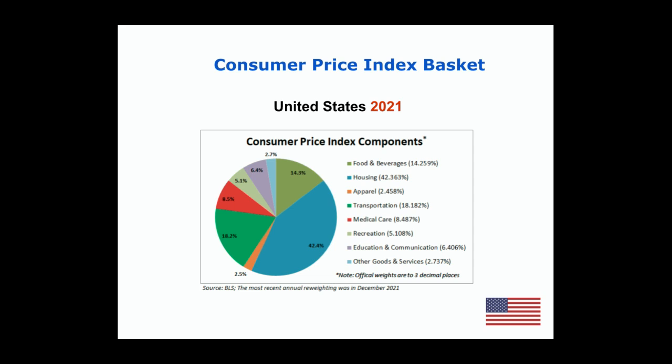When we look at the Consumer Price Index, we can see those eight categories and how they're weighted. The last weighting was done in 2021, and you can see that 42% of the basket is on housing, 18% is on transportation, 14% is on food and beverage, and medical care is 8.5%. Each one of the main categories is weighted based on the representative things that people are spending their money on.